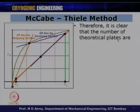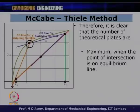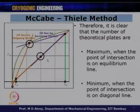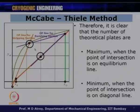The operating line will always be between the equilibrium curve and the diagonal. Therefore, the number of theoretical plates are maximum when the point of intersection is on the equilibrium curve — the vertical lines are very small and numerous. The number of theoretical plates will be minimum when the operating lines are intersecting on or lying on the diagonal itself, giving big jumps and fewer vertical lines. These are the two extreme cases; the actual case will be a compromise between them.